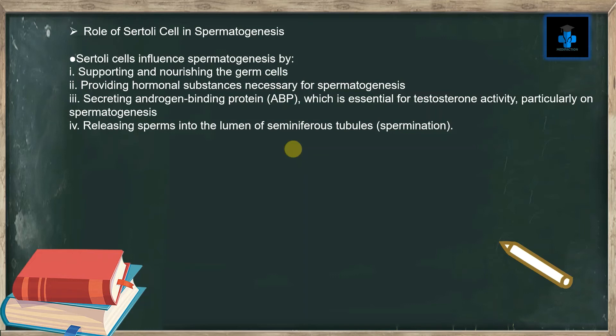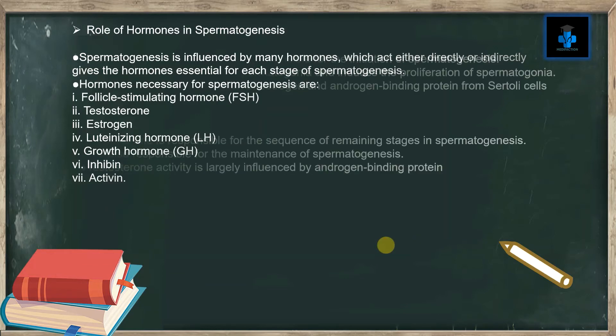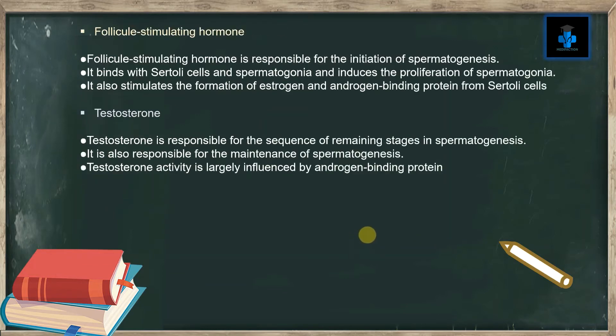The role of hormones in spermatogenesis: spermatogenesis is influenced by many hormones which act either directly or indirectly. Some of the hormones necessary for spermatogenesis are follicle stimulating hormone, testosterone, estrogen, luteinizing hormone, growth hormone, inhibin, and activin.